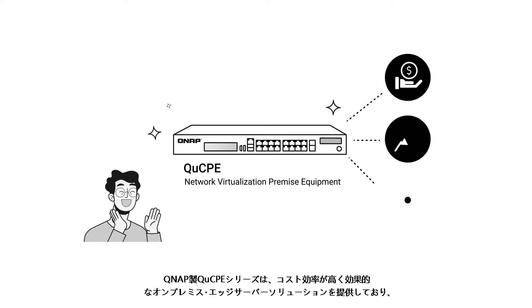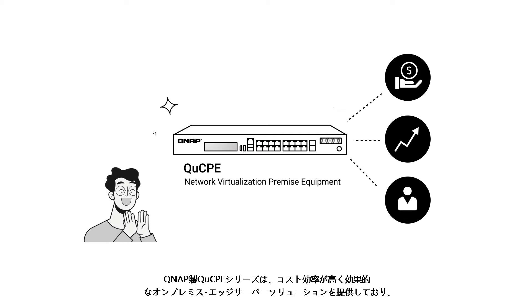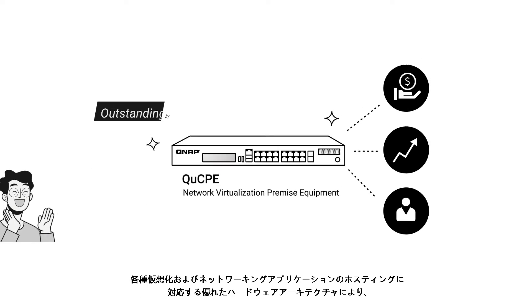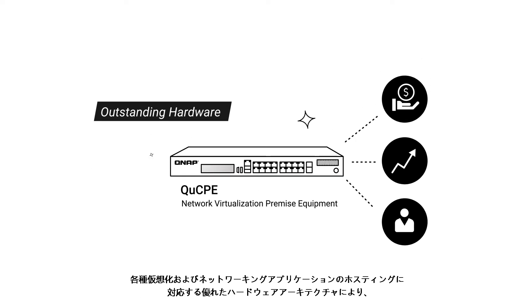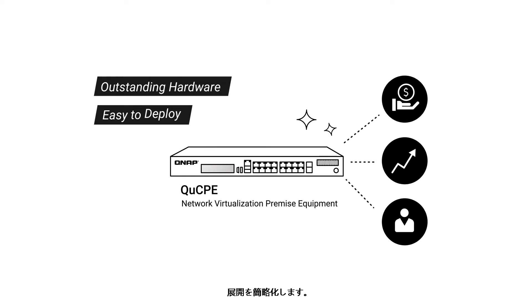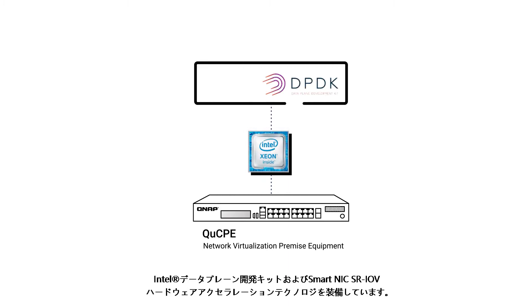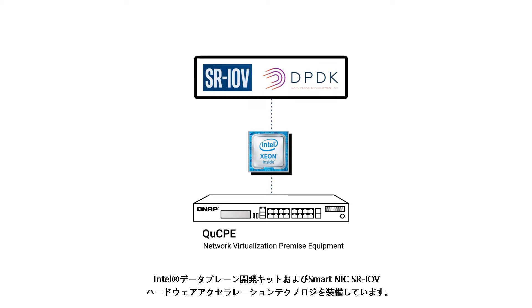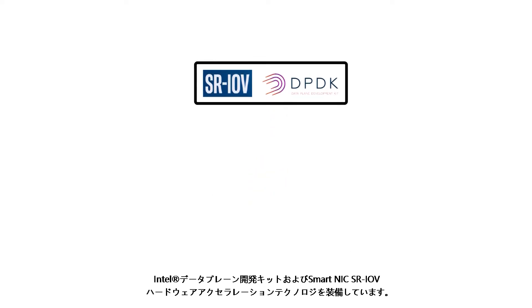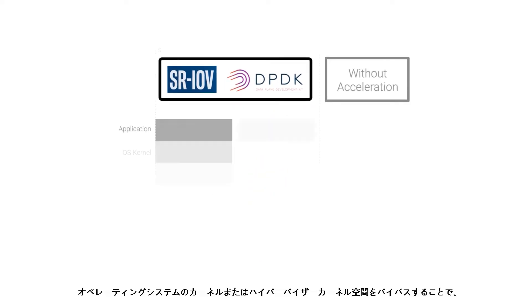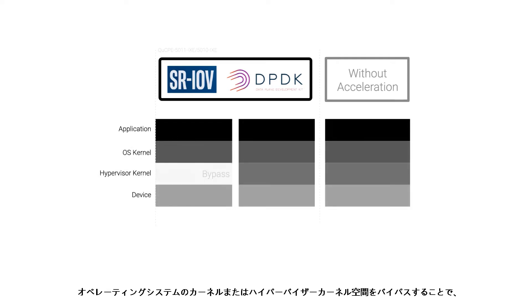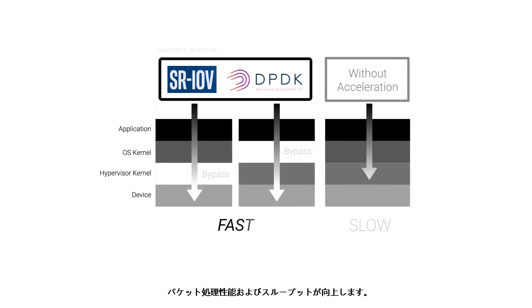QNAP's QCPE series provides a cost-effective and efficient on-premise edge server solution that features outstanding hardware architecture for hosting various virtualization and networking applications that simplify deployment. The QCPE series adopts high-performance Intel Xeon D 12-core processors with Intel Data Plane Development Kit and SmartNIC SRIOV hardware acceleration technology. Through bypassing the operating system kernel or hypervisor kernel space, this helps speed up packet processing performance and throughput.